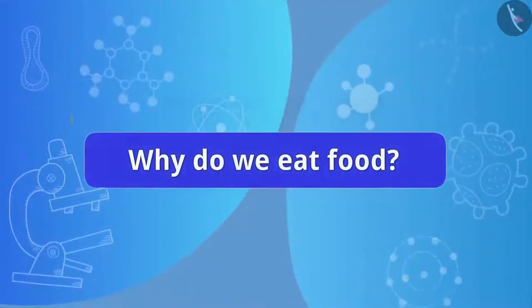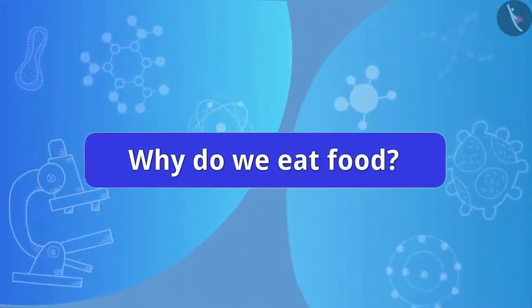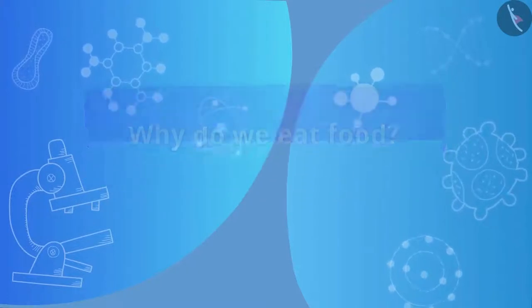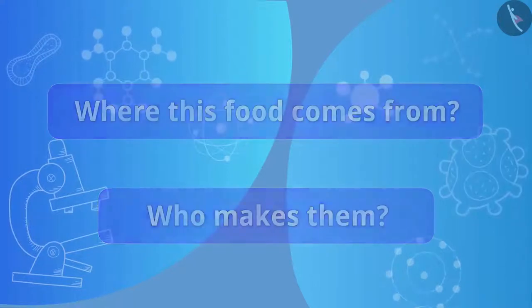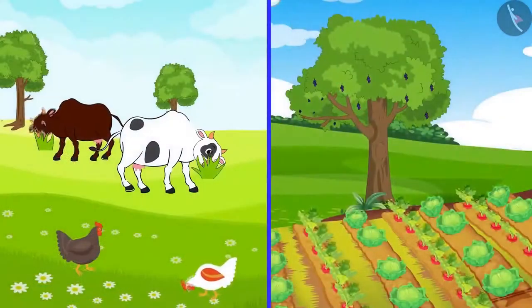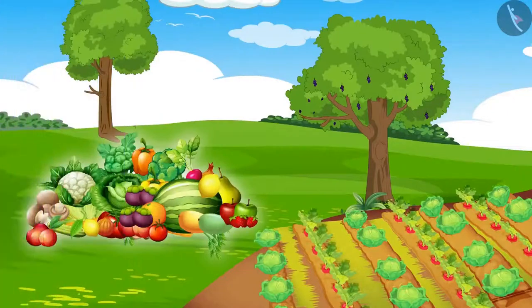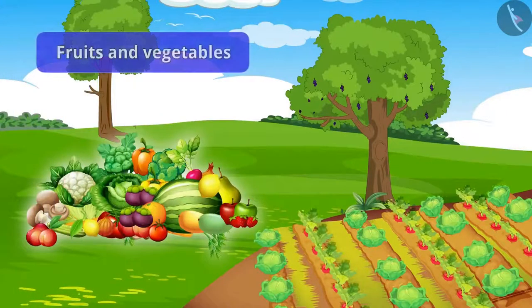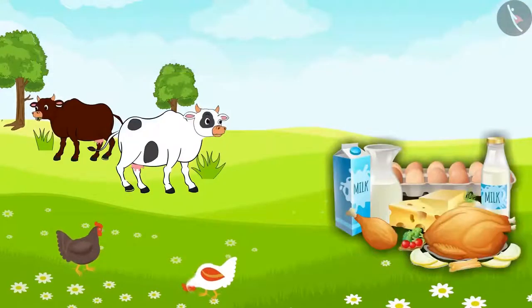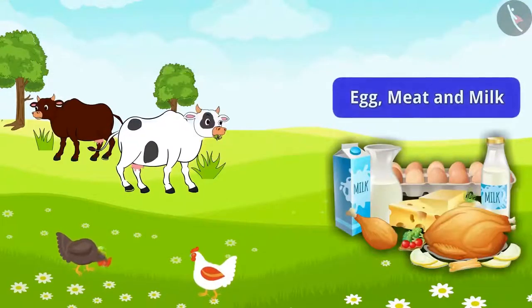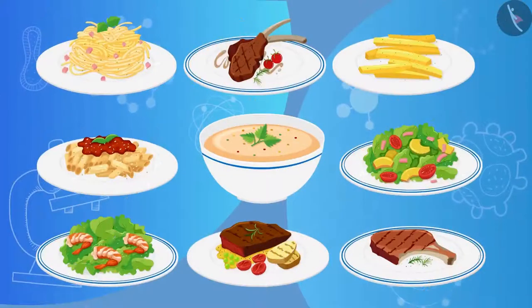Friends, why do we eat food? To get energy, right? But have you ever thought where this food comes from? Who makes them? Well, humans get food from trees, plants and animals. So, what do we get from trees? We get fruits and vegetables. And what do we get from animals? Animals provide egg, meat and milk. And by combining all these, we prepare different varieties of food.